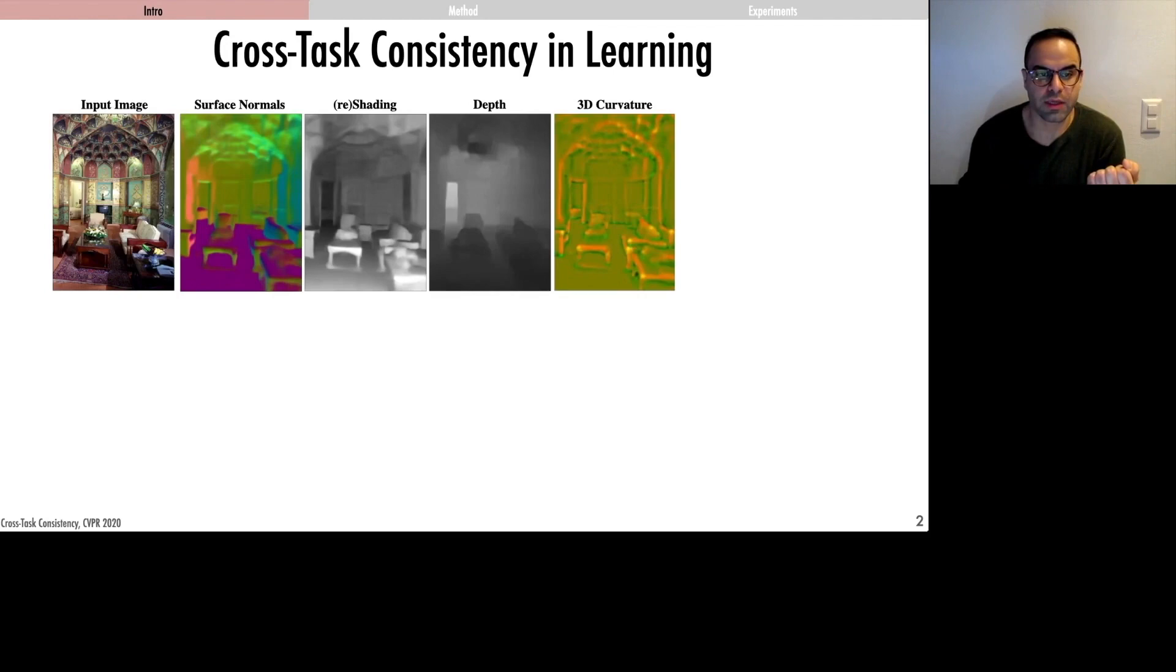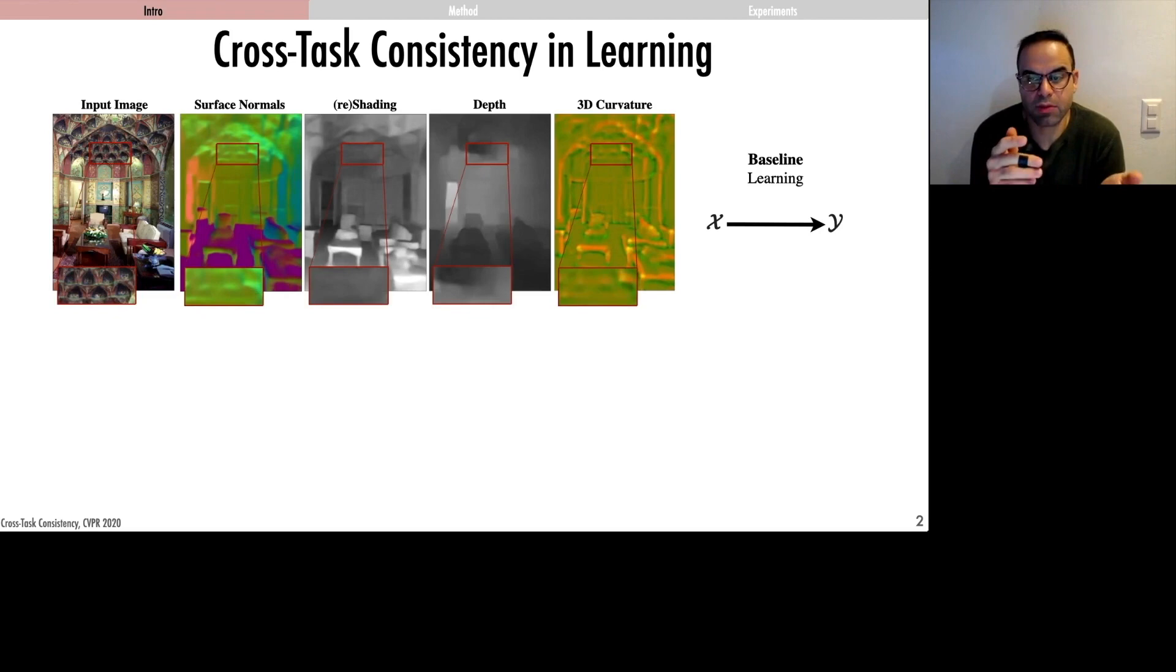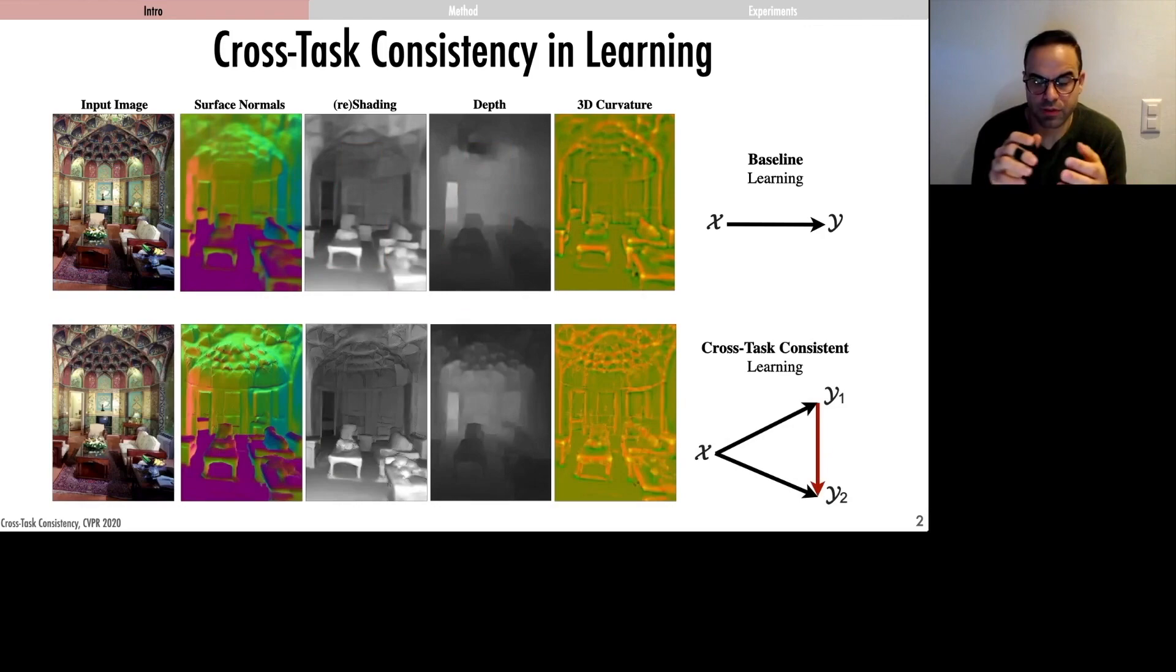A common solution is to independently train neural networks for each of these tasks, which leads to results that are often inconsistent with each other. For example, you can see in these magnified windows that depth and normals clearly have not recovered the same 3D shape. This paper proposes a method for addressing this general issue through cross-task-assisted learning.